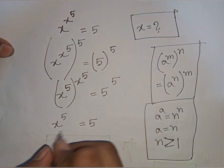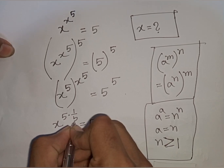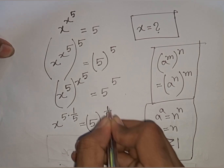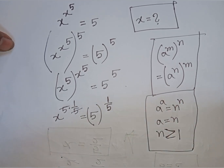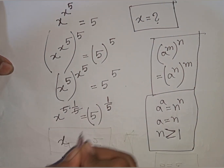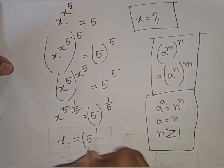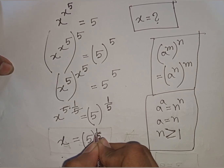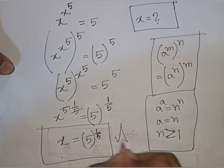Now we multiply by power of 1 by 5 on both sides because we need the value of x. So multiply by power of 1 by 5. So this 5 and this 5 will be cancelled. So we have x power 1, which is same as x, is equal to 5 power of 1 by 5. So 5 power of 1 by 5 — this is the value of x. This is our final answer.